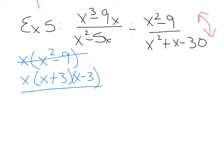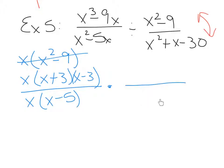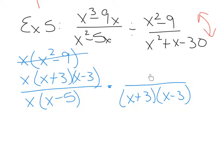The denominator has a GCF of x, leaving us with x minus 5. This divide always changes to multiply. Then we factor x squared minus 9 — again the difference of squares — but we write those factors in the denominator since we're flipping. The denominator is a standard trinomial, and we write those factors in the numerator. Those turn out to be x plus 6, x minus 5.